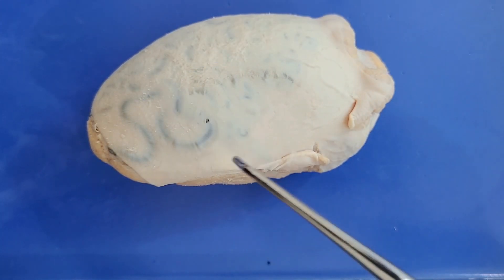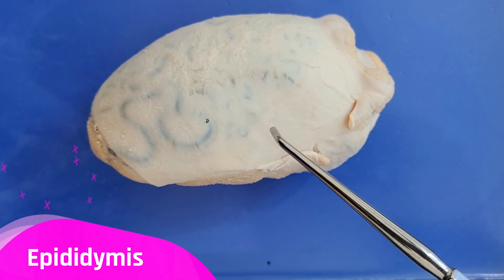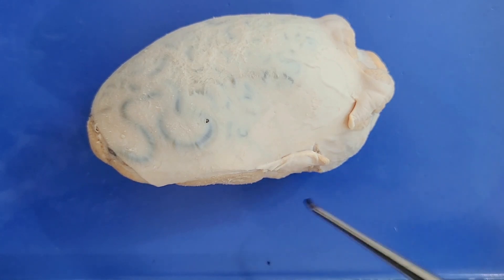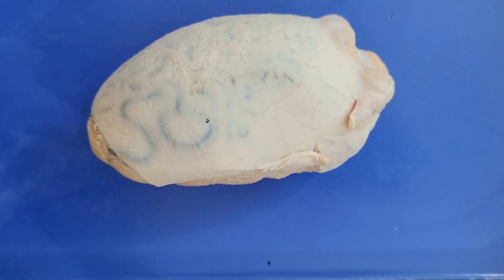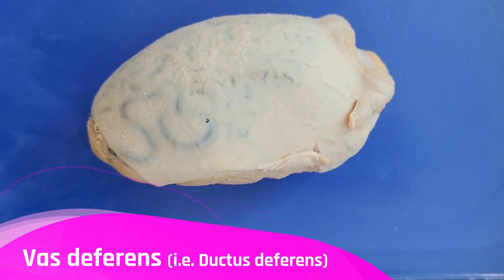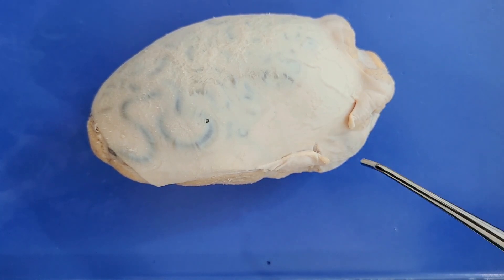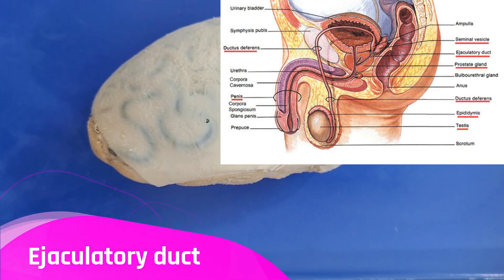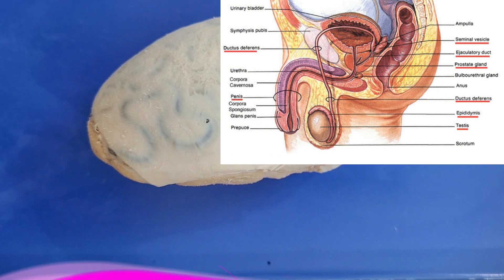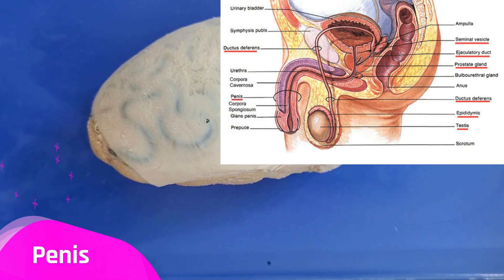After spermatogenesis takes place in the testes, the sperm enters the epididymis — coiled around past the tip of the testes — a long coiled tube that transports sperm from the testes. The epididymis is also where sperm mature and gain the ability to swim. After traveling through the epididymis, sperm enters the vas deferens, a tube lined with smooth muscle, which transports sperm into the ejaculatory duct. There, sperm cells are suspended in fluid secreted by the prostate gland and seminal vesicles, creating semen. The semen is ejaculated through the penis, and if a sperm cell fertilizes an egg cell, an embryo will form and develop.